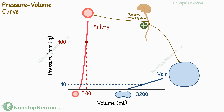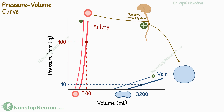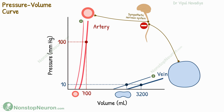Sympathetic stimulation increases vessel tone, so at any pressure, less volume fits — in the graph, this appears as a shift towards lower volumes. Under sympathetic stimulation, the same pressure holds less blood, meaning the vessel has been emptied by that amount. On the other hand, inhibition of sympathetic activity decreases tone, so more blood can be accommodated at the same pressure, and the curve shifts towards higher volumes, helping store blood in vessels.